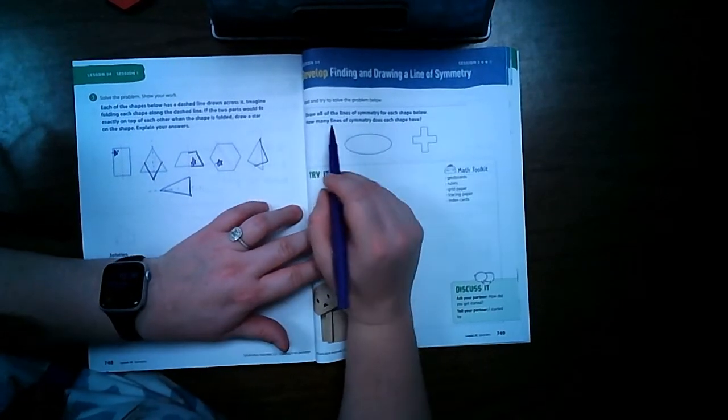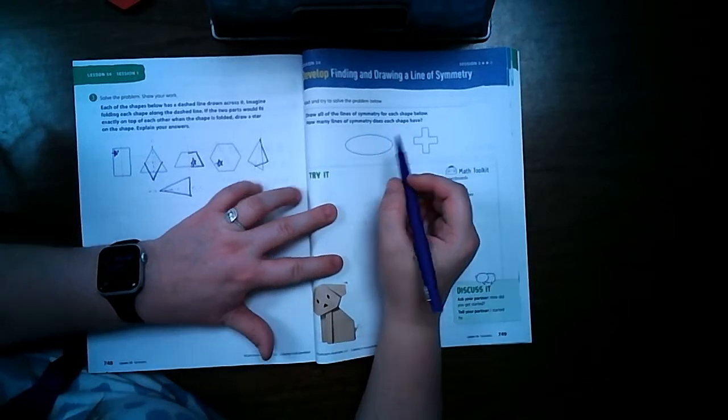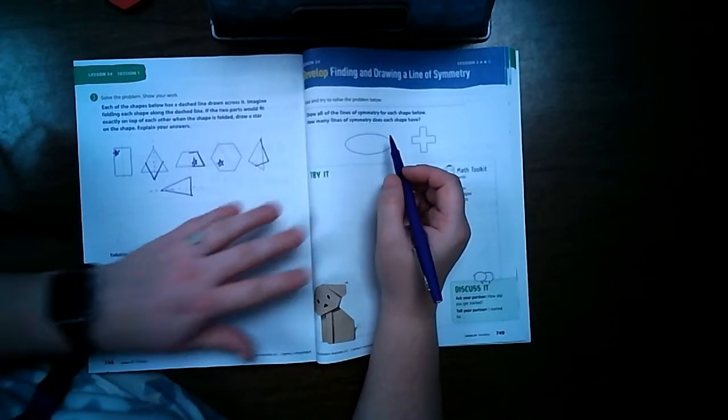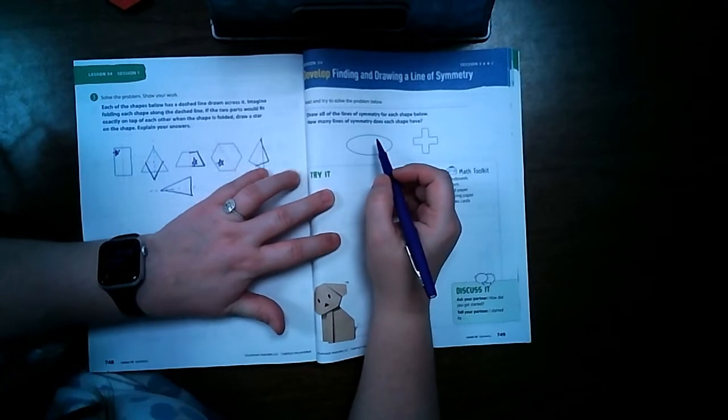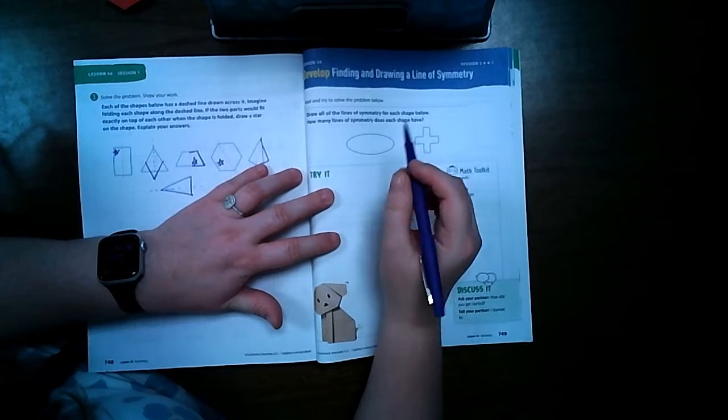How many lines of symmetry does each shape have? The best way to do that is to put a piece of paper over this, trace it, and then cut it out and practice folding it.